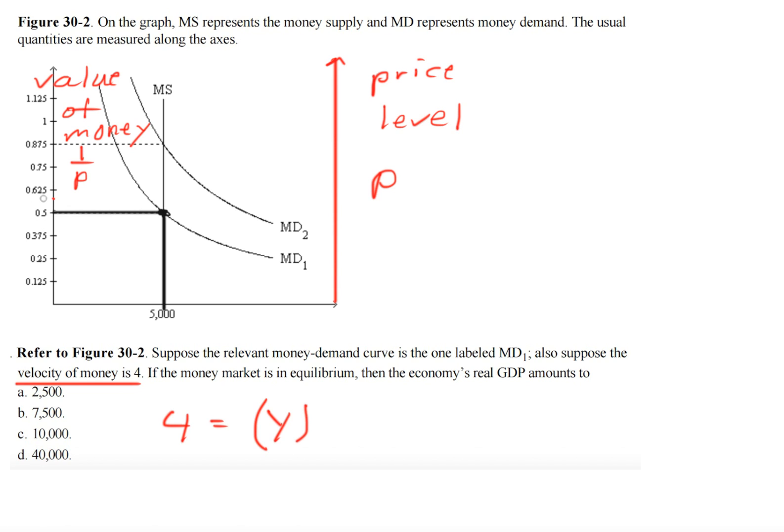And our price level, not 0.5. It's actually, so if we do 1 over 0.5, we get 2. And this is the price level.